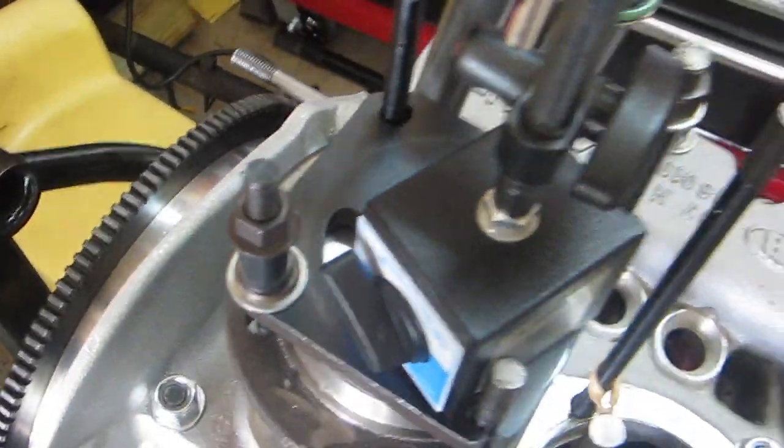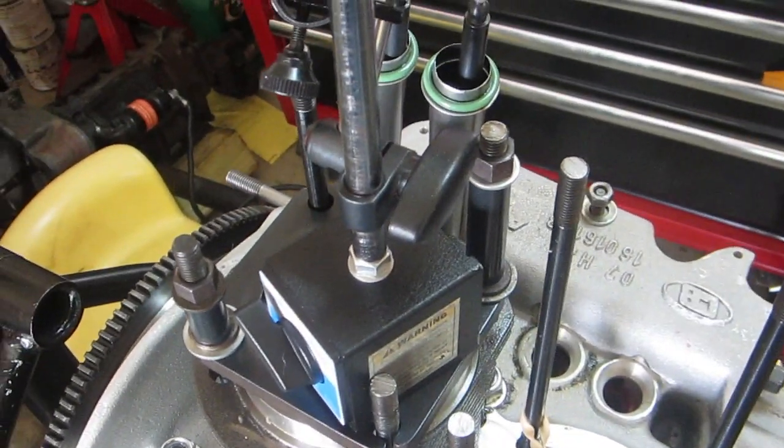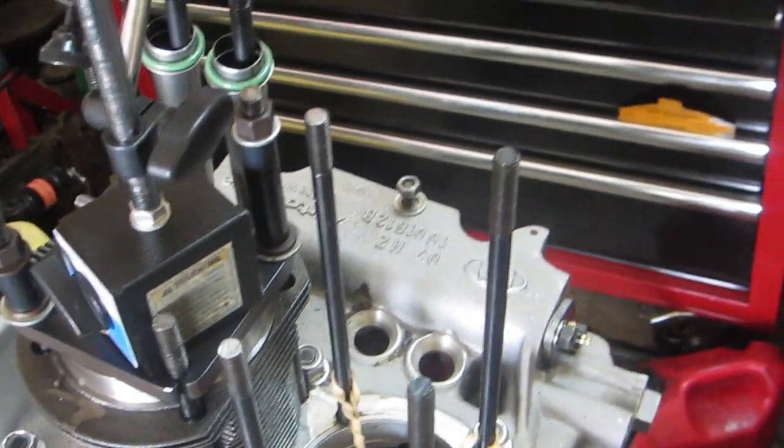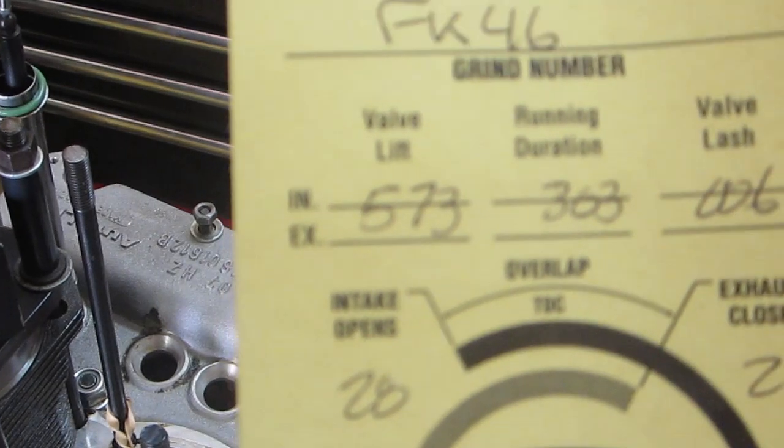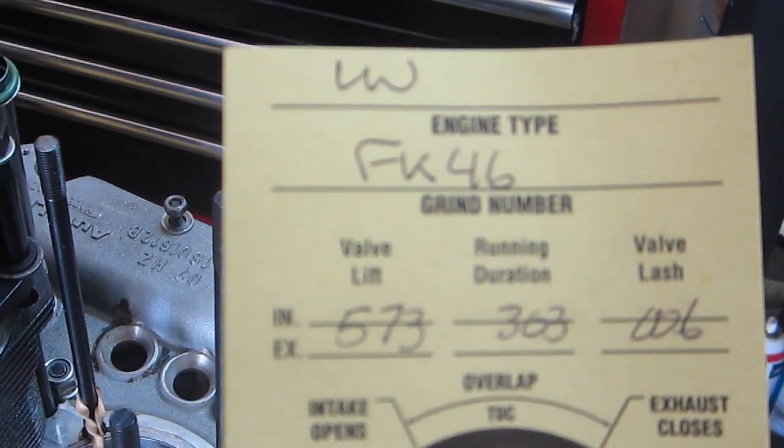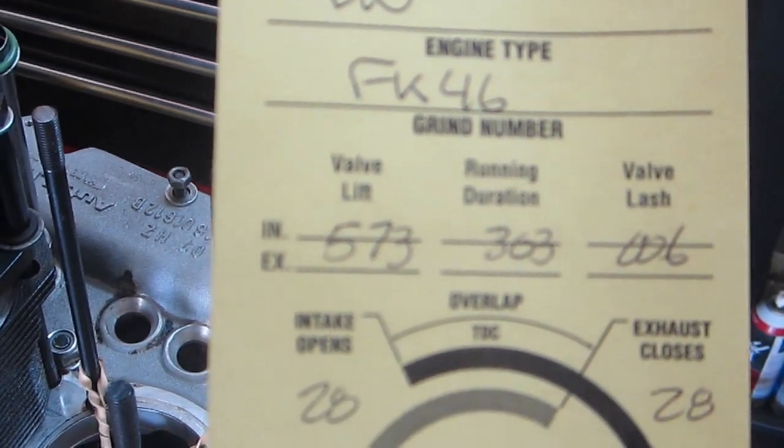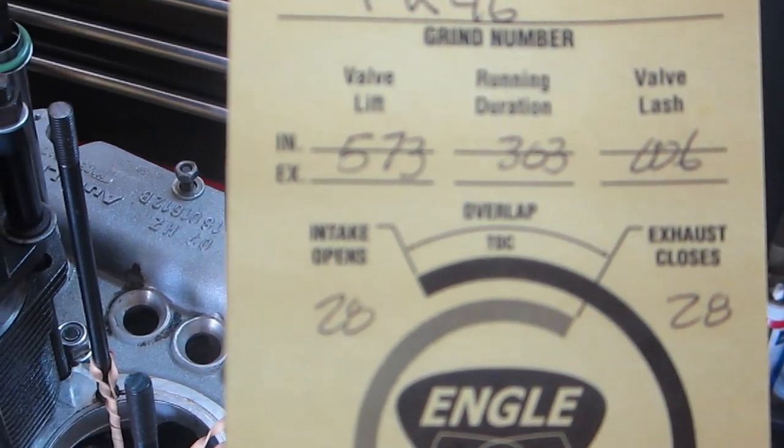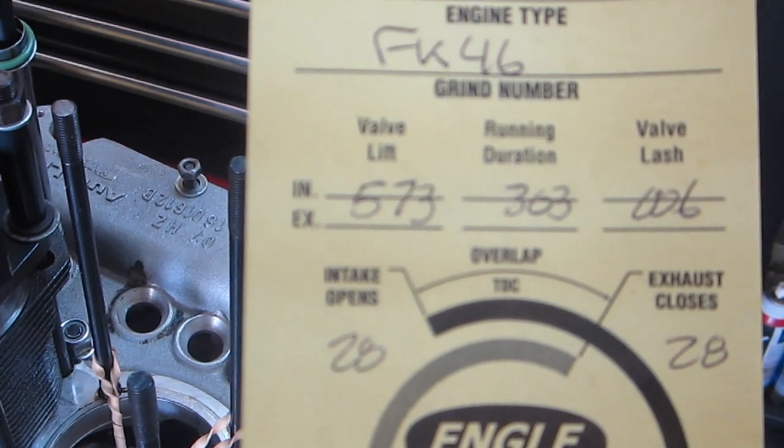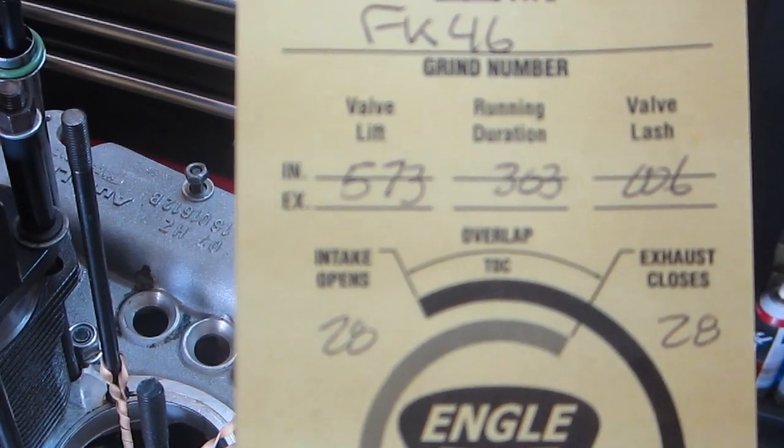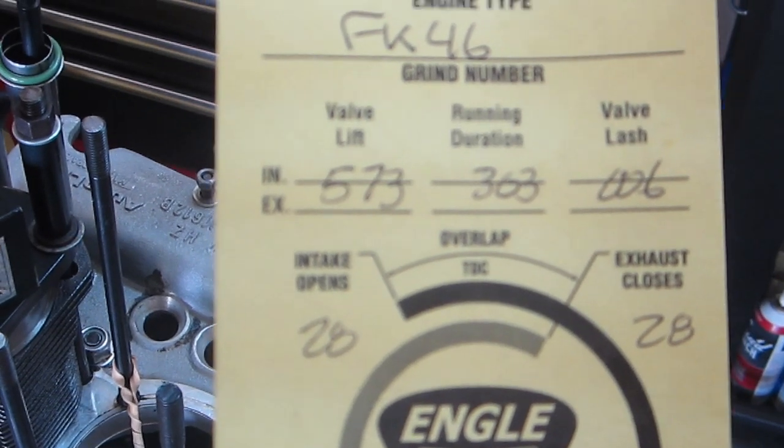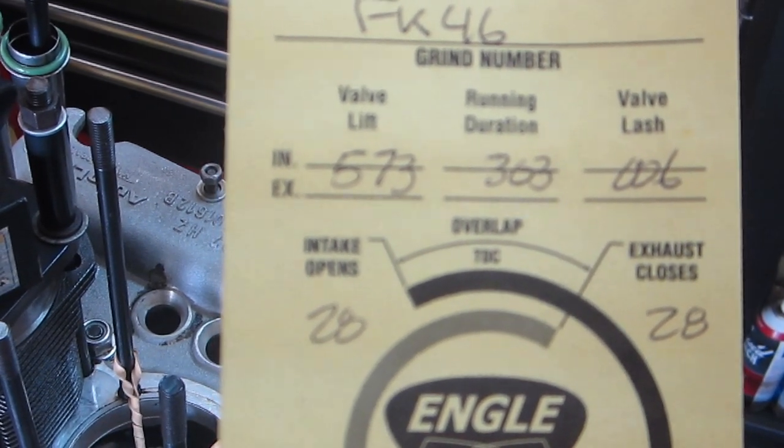Let me get by, and then on the cam card here. By the way, this is an Engle FK 46 cam going into my 2332. We're showing a total valve lift, assuming 1.4 rockers are used, which I plan to do, of 0.573 inch. That's a little, you know, almost 0.6 inches.